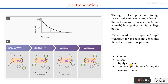The main advantages of electroporation are that it is very simple, very cheap, and highly efficient — meaning you can transform or transfect more cells at one time. It can also be used to transfer our gene of interest into both prokaryotic and eukaryotic cells.